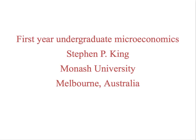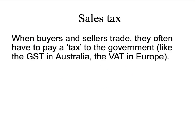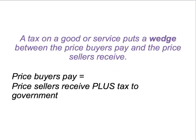Welcome back to First Year Undergraduate Microeconomics. We've been looking at a sales tax — a situation where buyers and sellers have to pay a tax to the government when they engage in trade. It's called a goods and services tax in Australia, or a value-added tax in Europe. In our running example, we've been looking at the pizza market, and the tax per pizza has been $2.50.